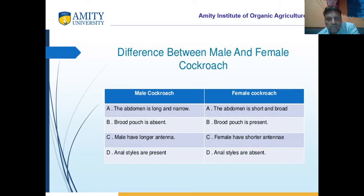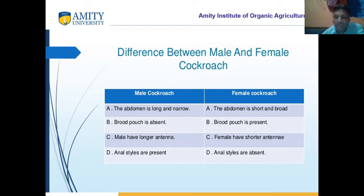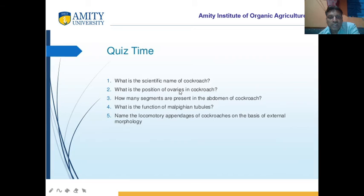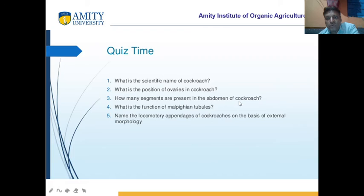What is the difference between male and female cockroach? Male cockroach has a longer abdomen; female cockroach has a short abdomen. Male has longer antenna; female has short antenna. In male, anal styli are present; in female, anal styli are absent. What is the scientific name of cockroach? It is Periplaneta americana. What is the position of the ovary in the cockroach? The ovary is on the 4th, 5th and 6th segment. There are 10 abdominal segments in total.